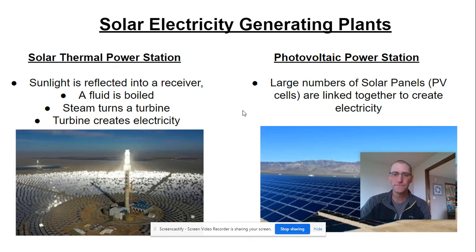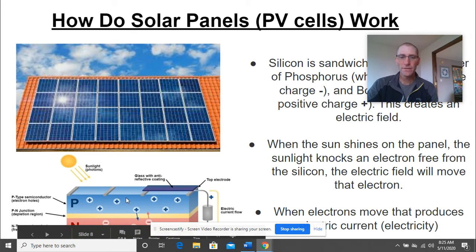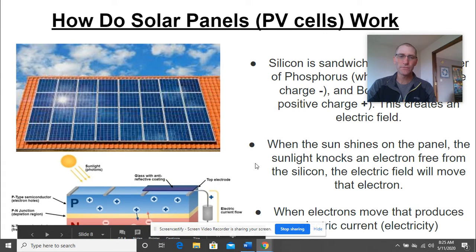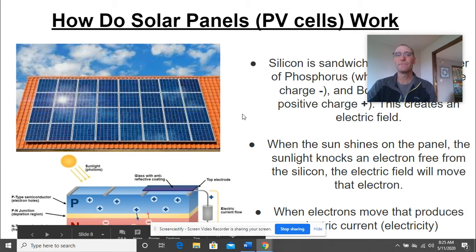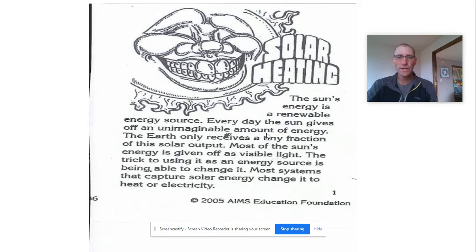How do PV cells work? Silicon is sandwiched between a layer of phosphorus and a layer of boron, giving a negative and a positive, which creates an electric field. When sunlight shines on the panel, it knocks an electron free and moves it down the current — that's what creates electricity. Because of the sun, we start that electron movement and it pushes down the flow. Pretty cool how electricity works.